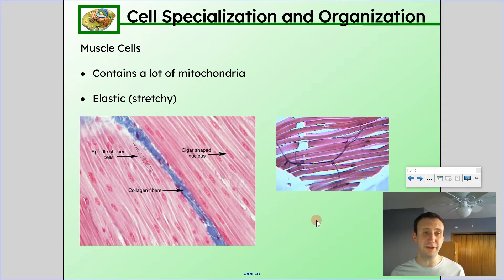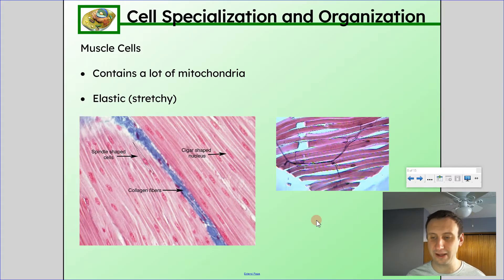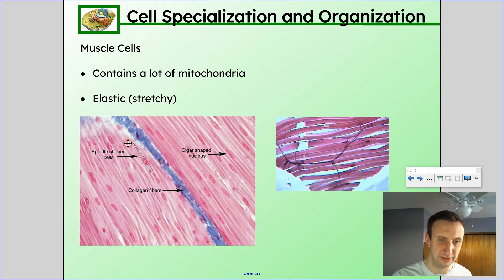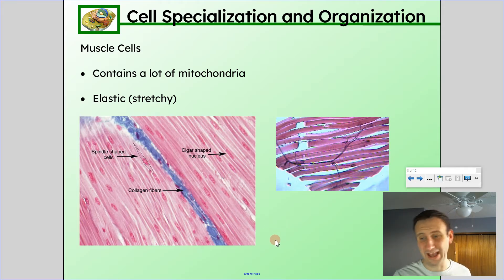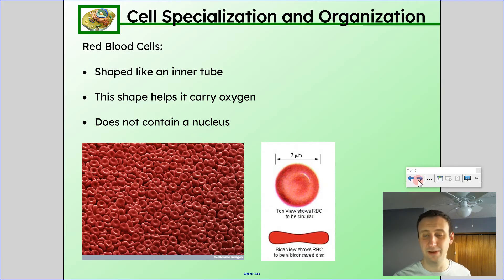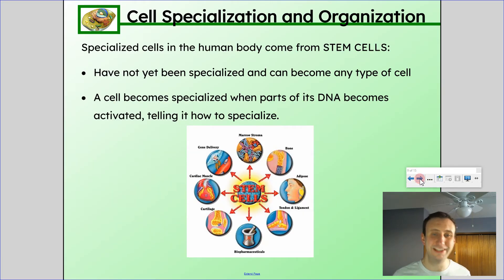Muscle cells have tons of mitochondria because they need cellular energy — they're turning sugars into cellular energy using mitochondria. They're also elastic and stretchy, and very long in terms of how they look. Here you can see a muscular tissue cell that has a cigar-shaped nucleus, which is quite different from other cells. When a muscle contracts, it shrinks — it's long and then it pulls together when contracting. That's a muscle cell, and it's very different in how it looks and what it has compared to, say, a red blood cell.